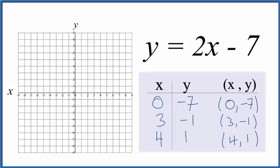We could take x is 0 and y is negative 7. So here's x is 0 and y is negative 7.